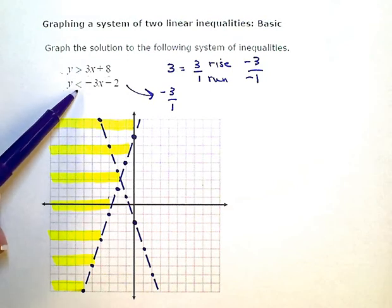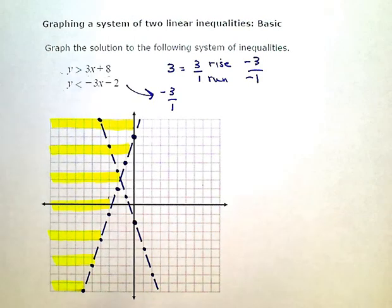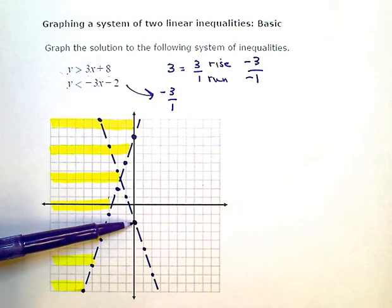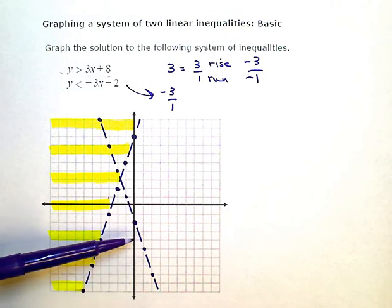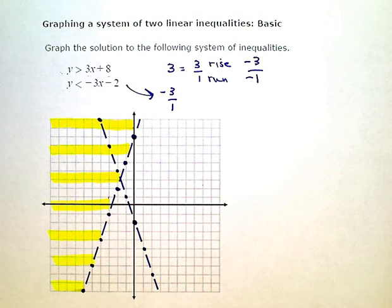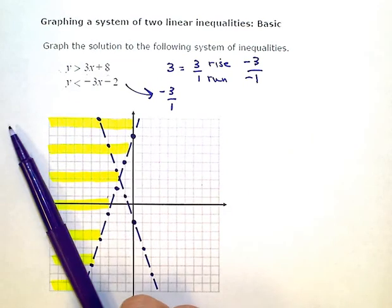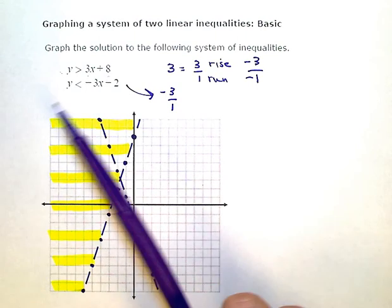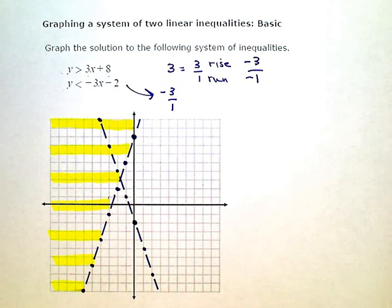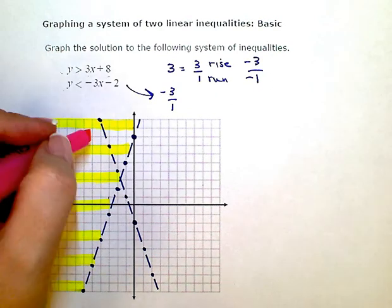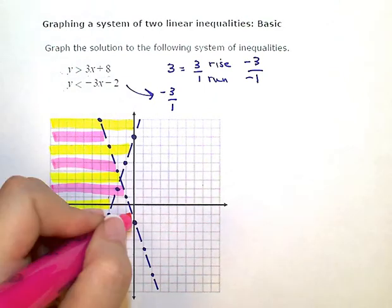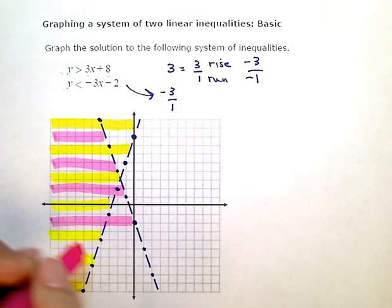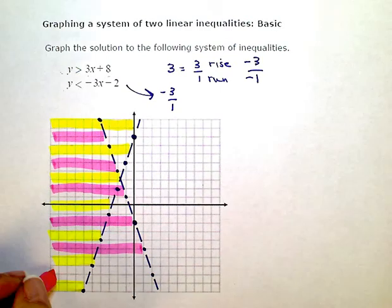So this time, I'm shading less than. So again, here's my y-intercept for this line at negative two. I want to shade less than or below that dot. So that means that I'm shading this entire side to this side of that line, and I'm going to leave everything to this side of that line unshaded. So I'm going to use a different color here and just put in some more stripes. This time I'm going to use pink and just kind of go in between the yellow ones that I did before.